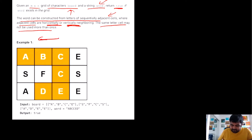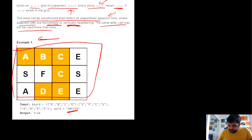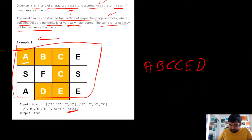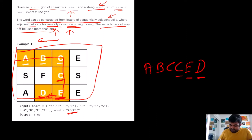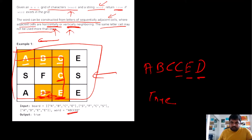Let's understand this with an example. We are given a big board and we need to find the word A-B-C-C-E-D. Starting with A, the neighboring character is B, the neighboring character is C, and then going vertically downwards we find another C, then E, and finally D which is adjacent to E. In this case we can return true. If we were not able to construct this word we would return false.